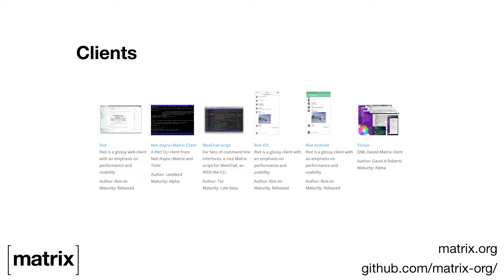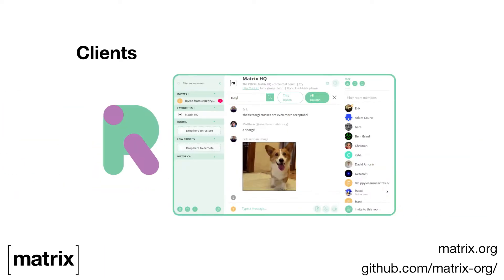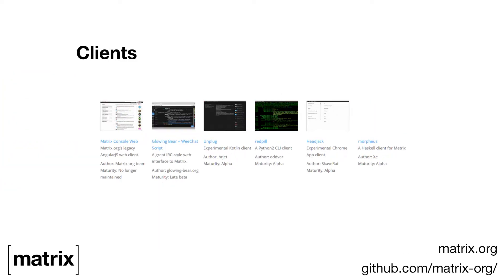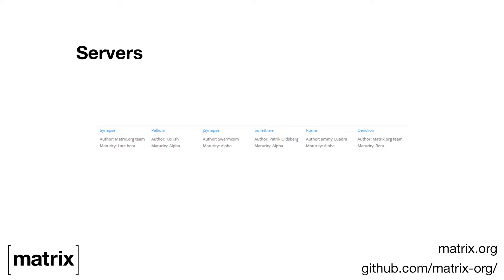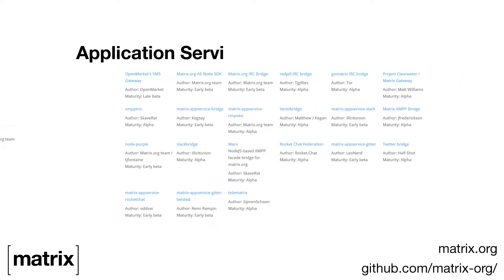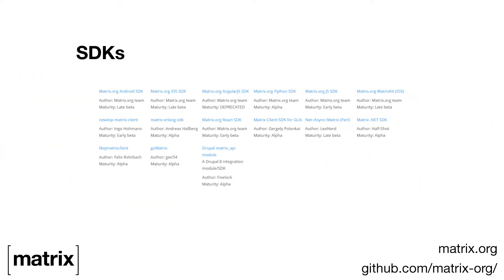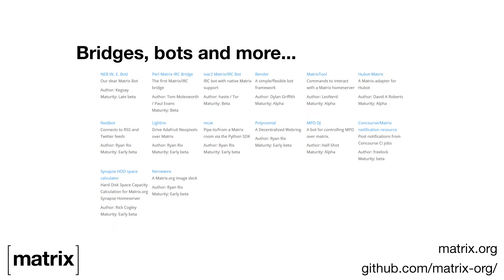Recently we've launched Riot, a feature-rich Matrix client, as an open-source alternative to other proprietary services. Several people have also contributed by writing clients, servers, SDKs, bridges to external services, and bots. The common factor of all these apps is that they can all talk to each other.